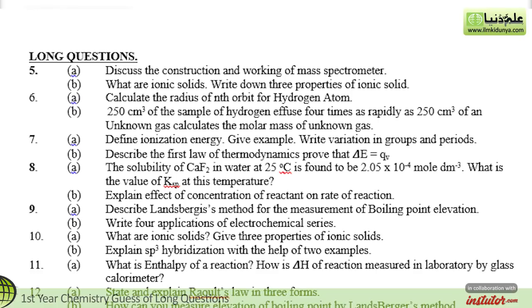Next, this is a long question. The important question is question number 7. Define ionization energy. Give example. Write variation in groups and periods. Question number 7: Describe the first law of thermodynamics. Prove that ΔE = q. You have this equation. You have to prove it.